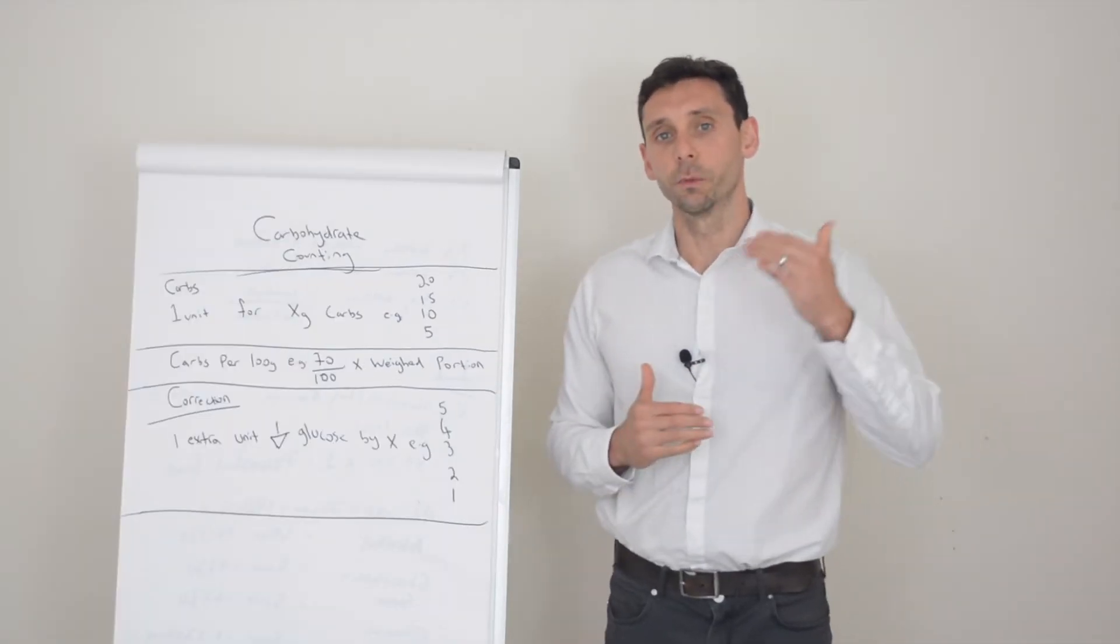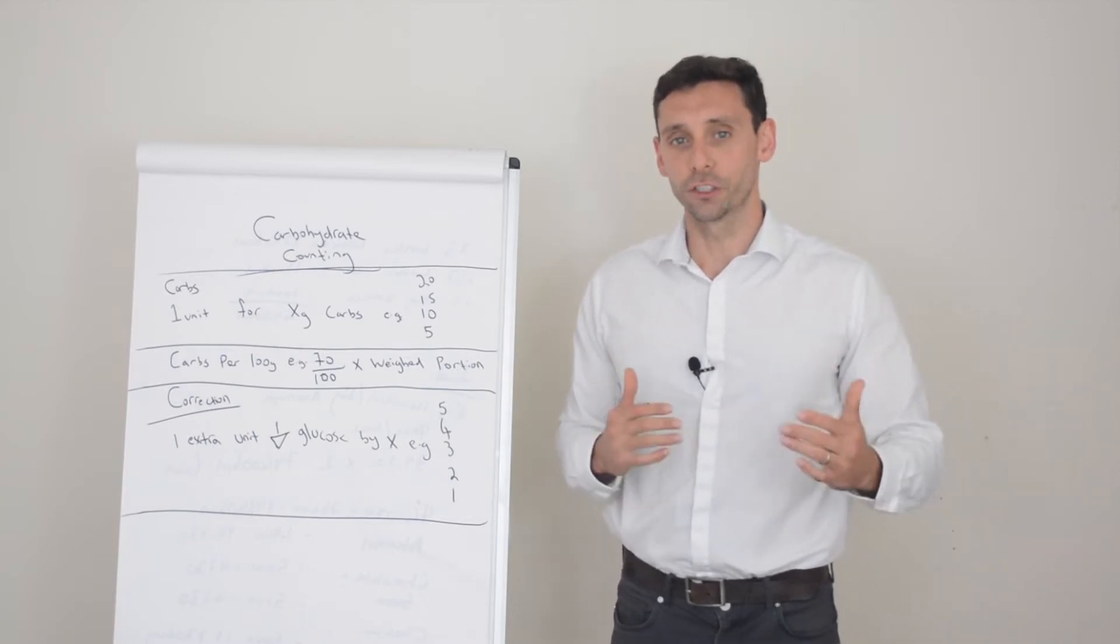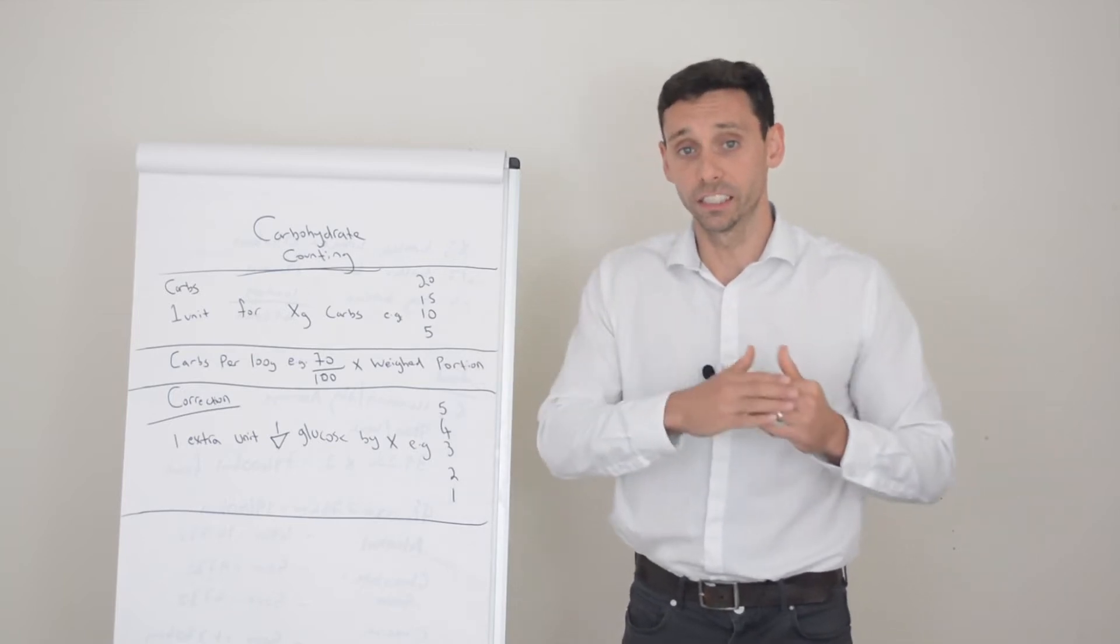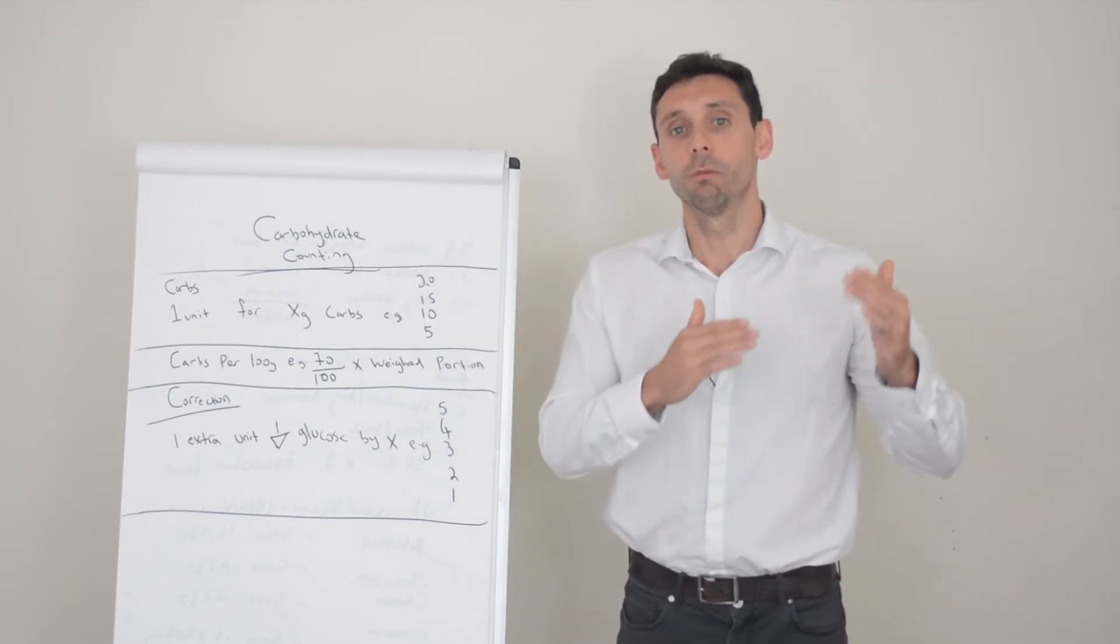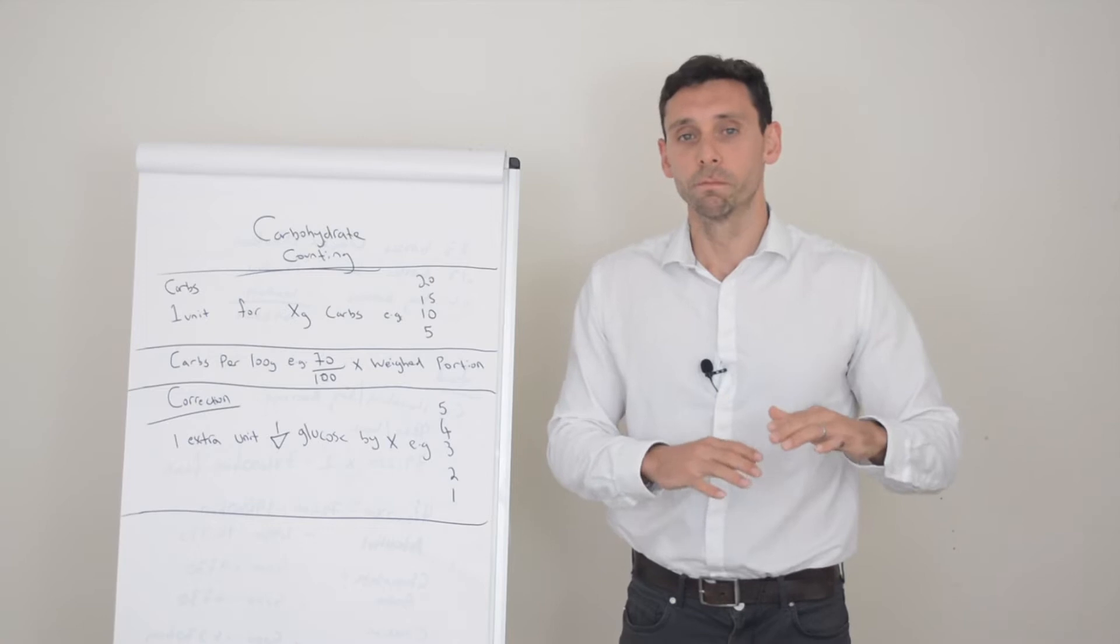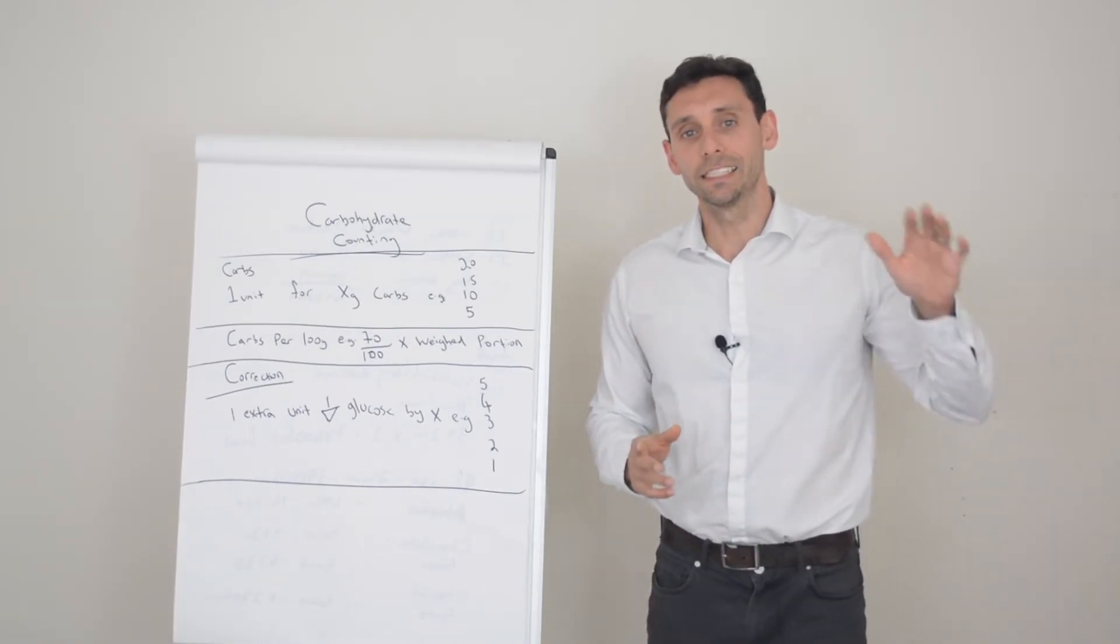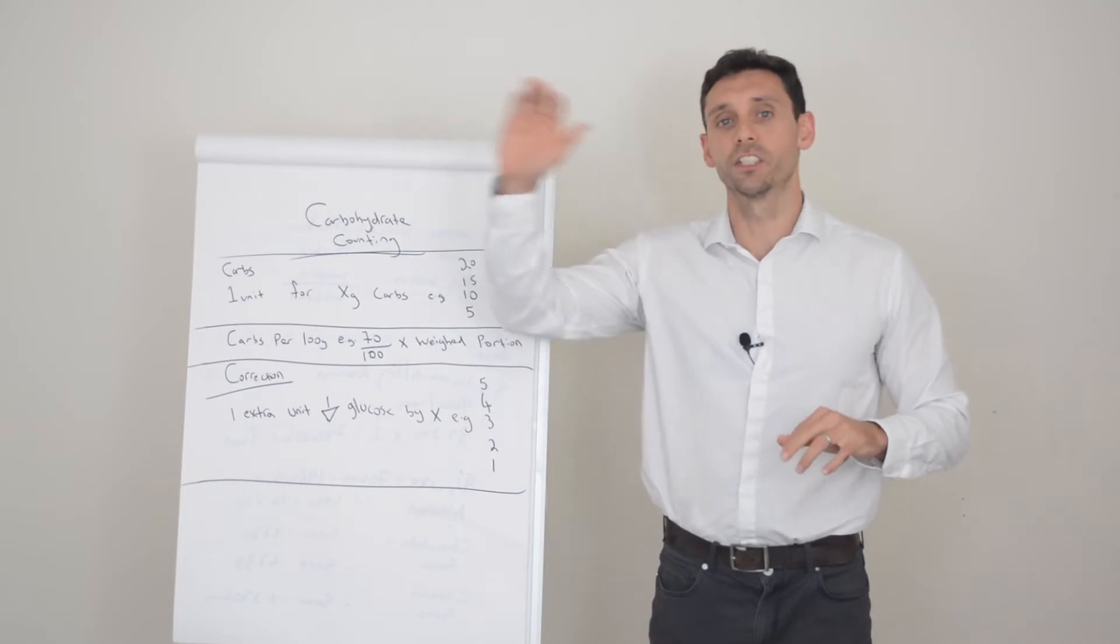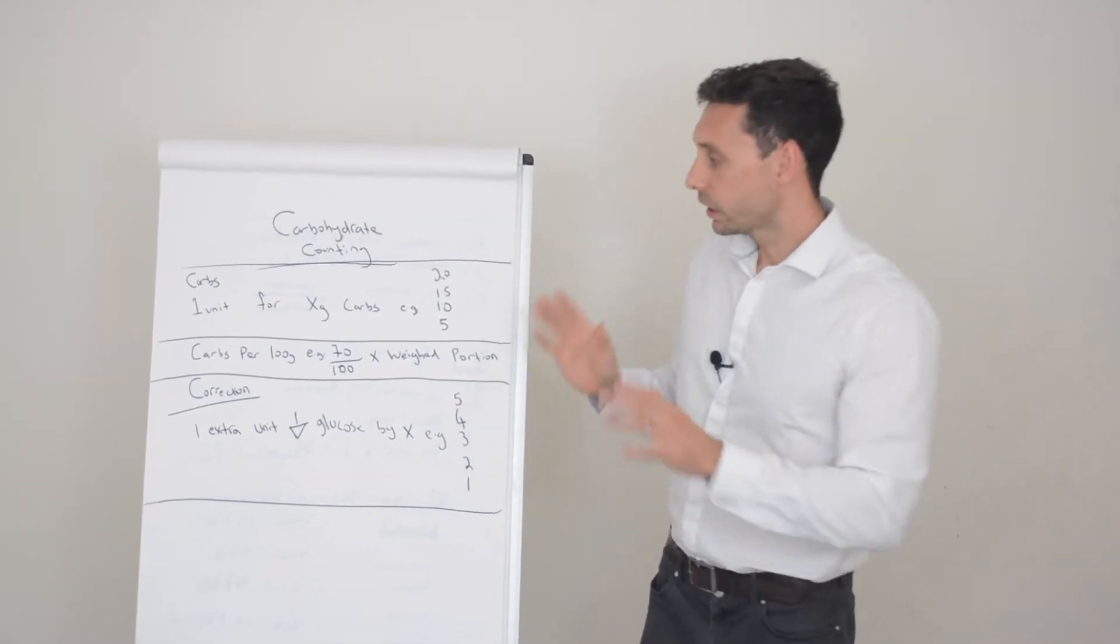Then there's another section that we can add on to this which is called a correction dose and this is extra insulin that you give with the meal on top of the insulin that you're going to give for the food to help lower high glucose levels. This really helps to balance out any erratic levels that you're seeing and also stops you running perpetually high all day. So let's just delve into it.